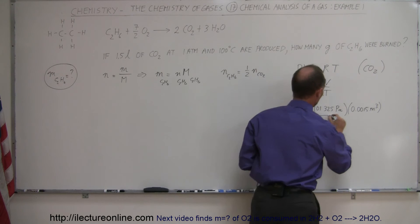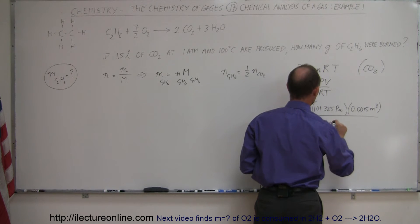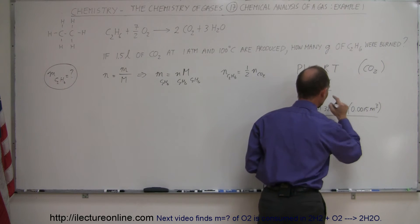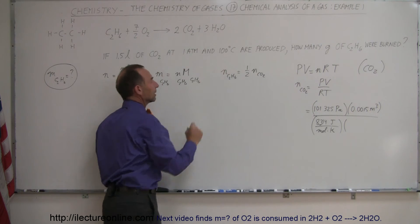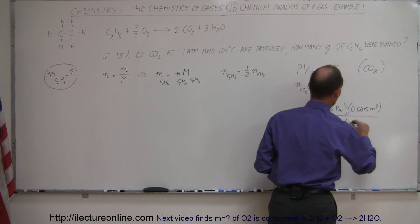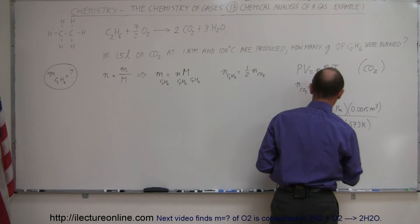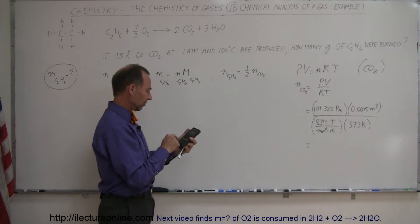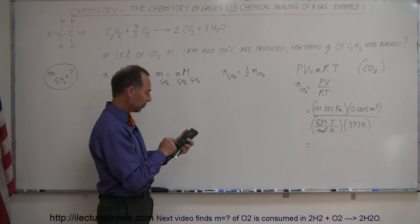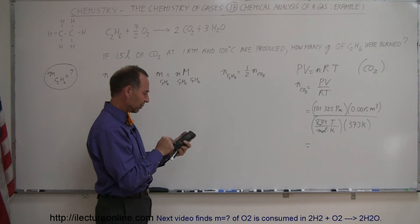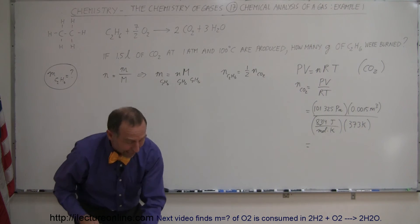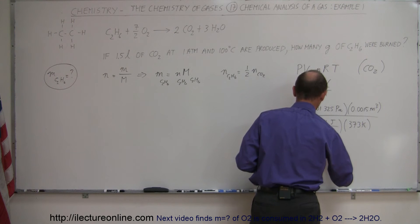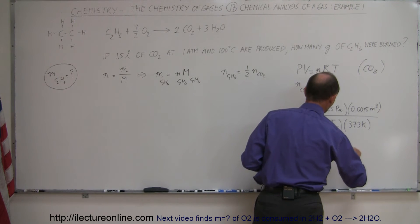Now we have the gas constant, which is 8.314 joules per mole times Kelvin. Times the temperature — we're told the gas was collected at 100 degrees centigrade, which is 373 Kelvin (273 plus 100). So: 101,325 times 0.0015, divided by 8.314, divided by 373 equals 0.049 moles of CO2.